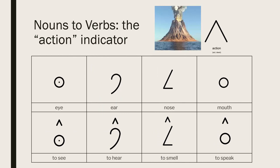For Charles Bliss, a volcano epitomized action and power, so he drew his action indicator from the shape of a volcano. He asked, what does the eye do? It sees. What does the ear do? It hears. And so on. This is how verbs are easily built from nouns.